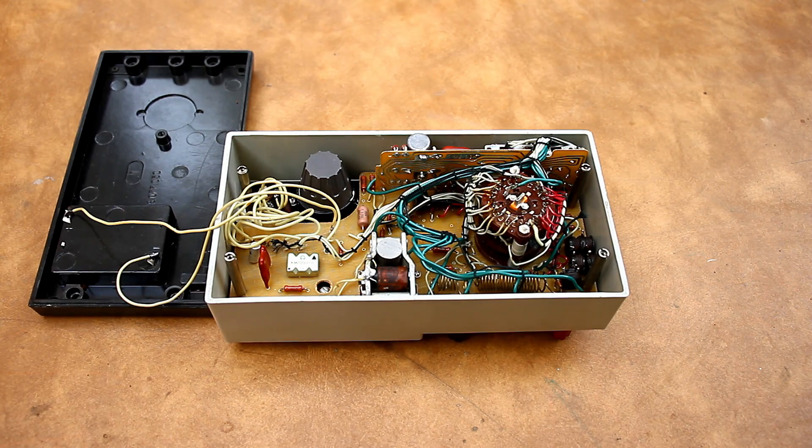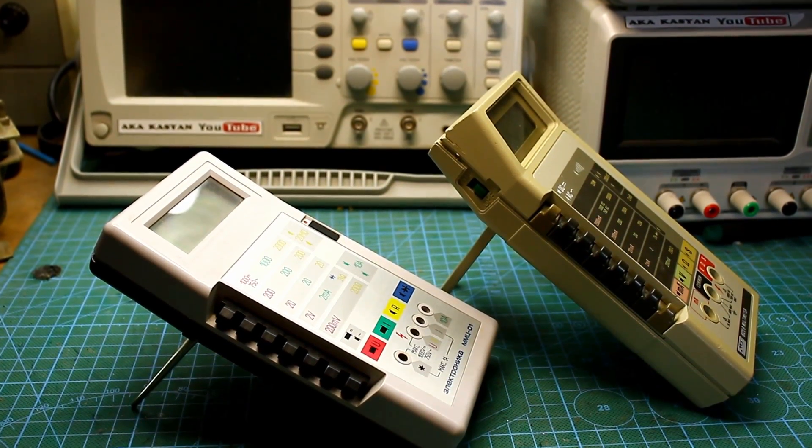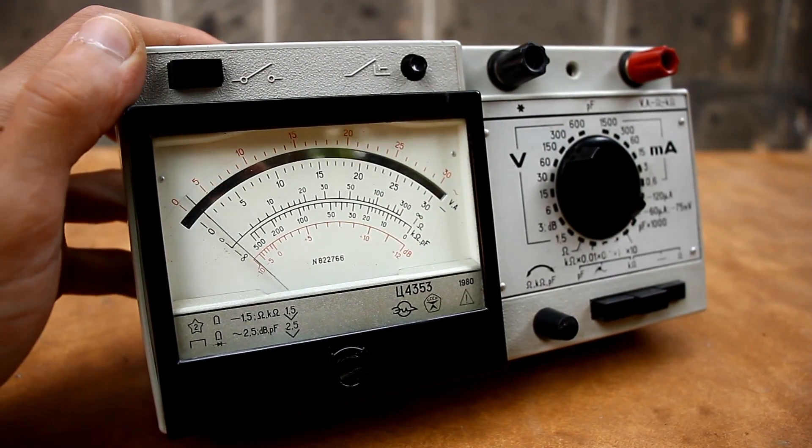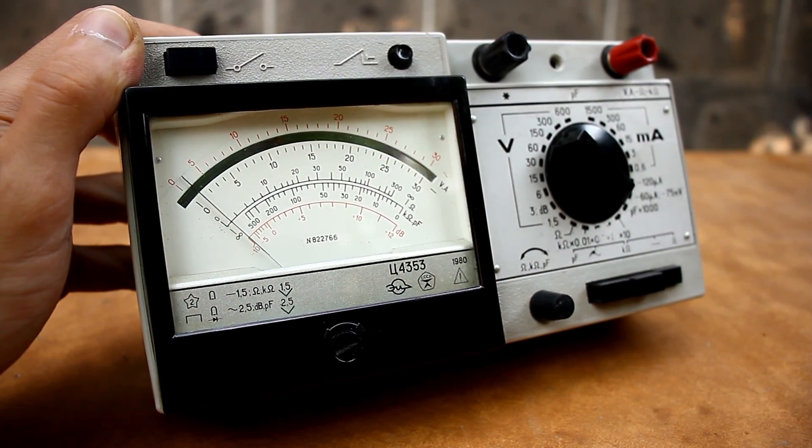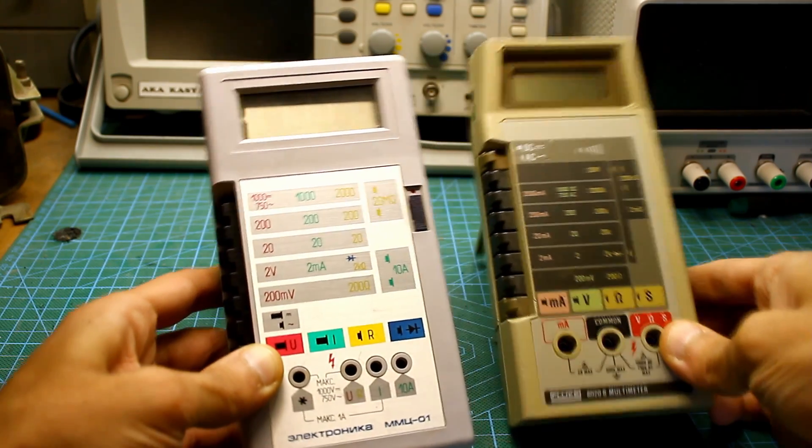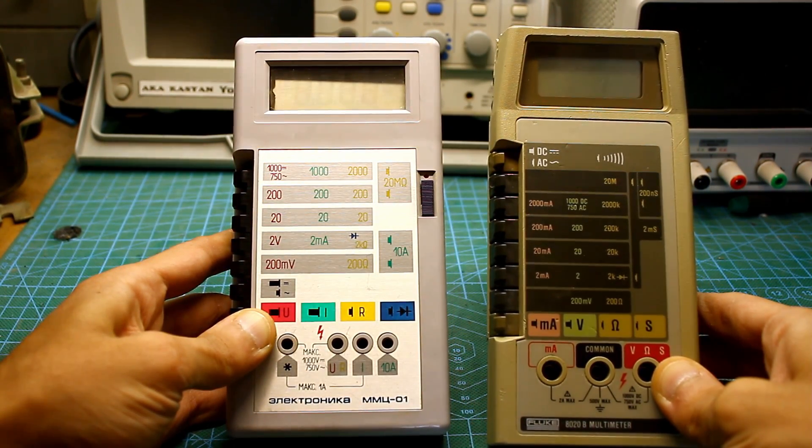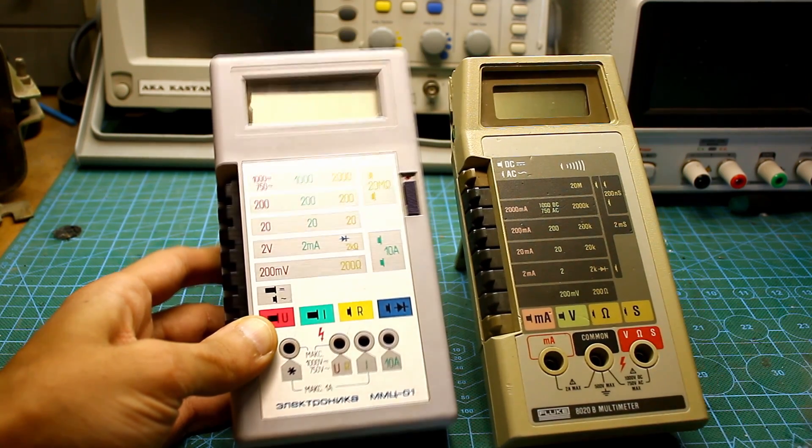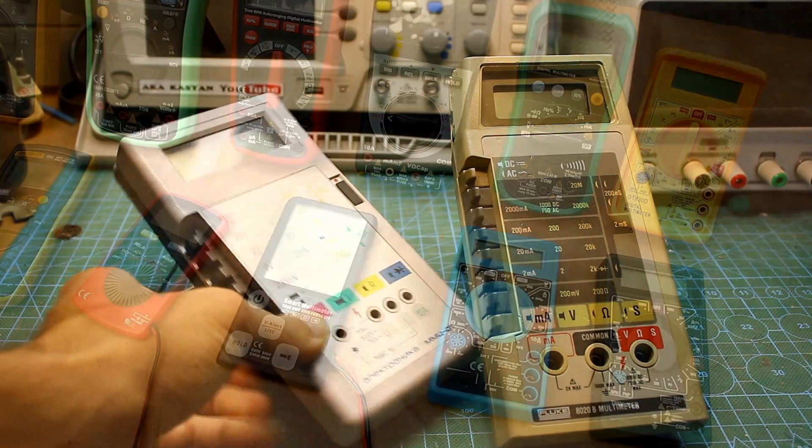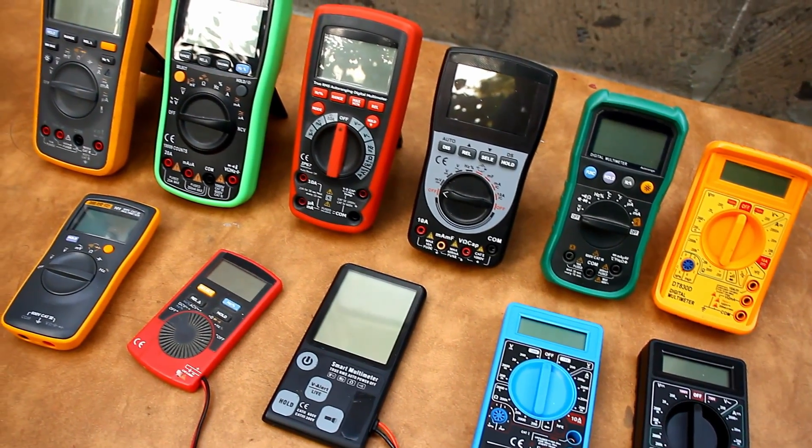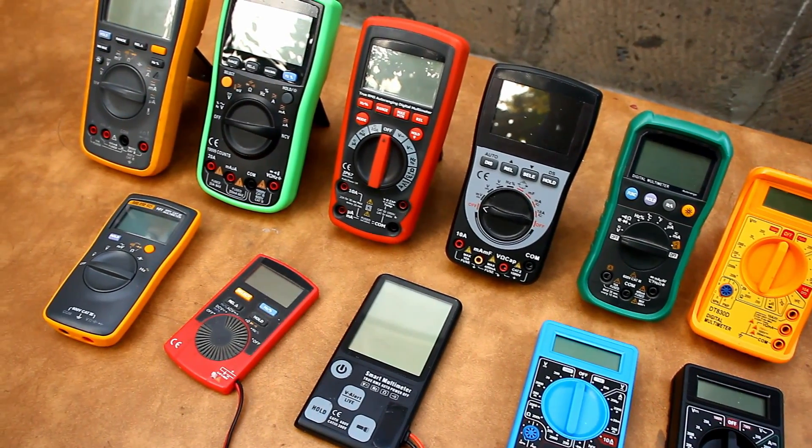Well, friends, this video is coming to an end. If you are interested, then in further videos we will compare the American Fluke 8020 and its direct Soviet competitor or a copy, I mean the electronic MMT-01. Now, I say goodbye until we meet again. With you as always, it was Kaseyan TV. We'll be right back.